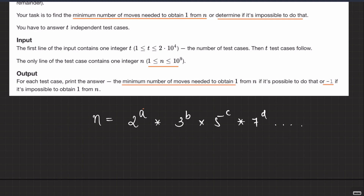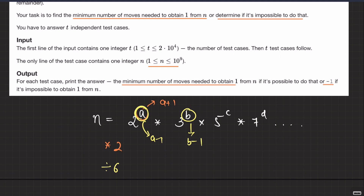What operations do we have? We can either increase the power 'a' — if you multiply by 2, 'a' becomes a+1. When I divide by 6, using a different color here: 'a' reduces and 'b' reduces — both the power of 2 and the power of 3 are reduced because 6 = 2 × 3. Of course, you need a power of 2 and a power of 3 existing if you want to divide by 6.